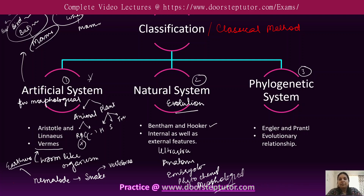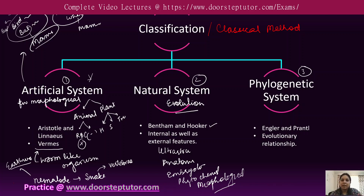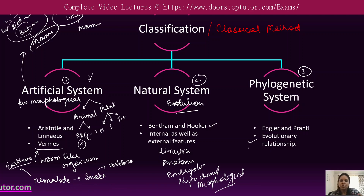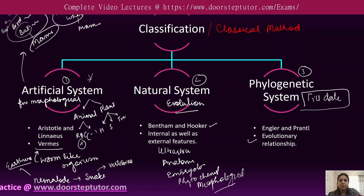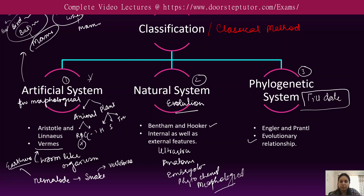The third system is the phylogenetic system, given by Engler and Prantl, and it is based on evolutionary relationships — how organisms evolved from a common ancestor and how they are related to each other. This classification system is used to this day and is one of the most important systems for classifying organisms based on their evolutionary history.